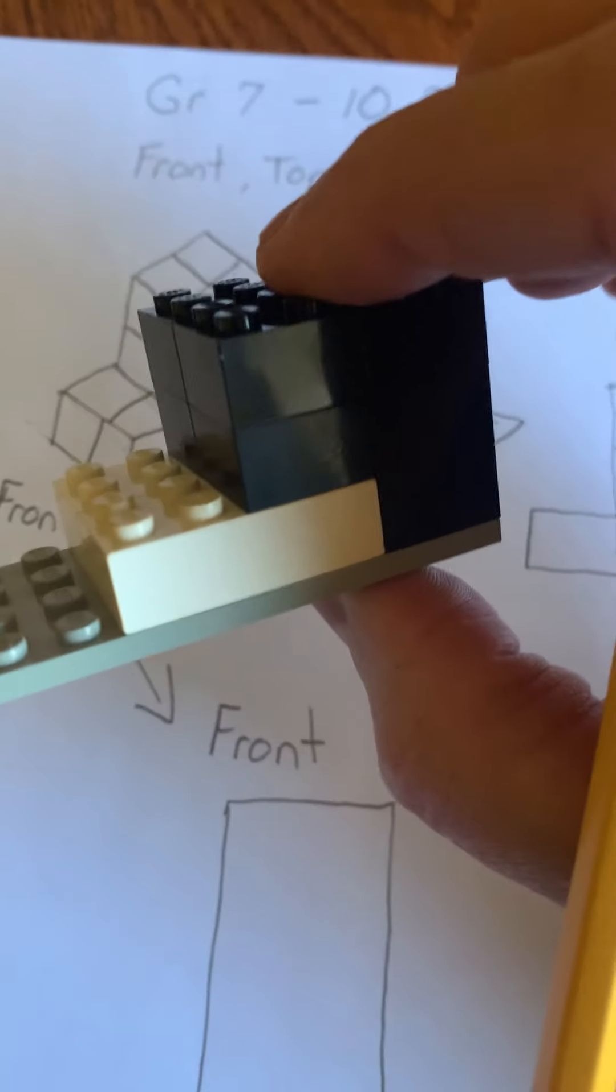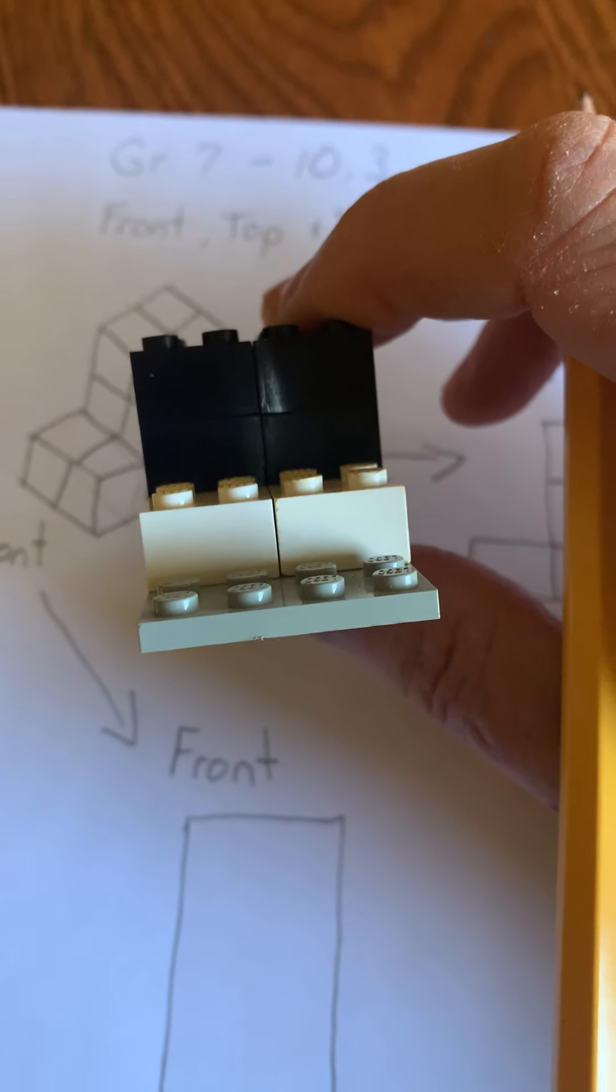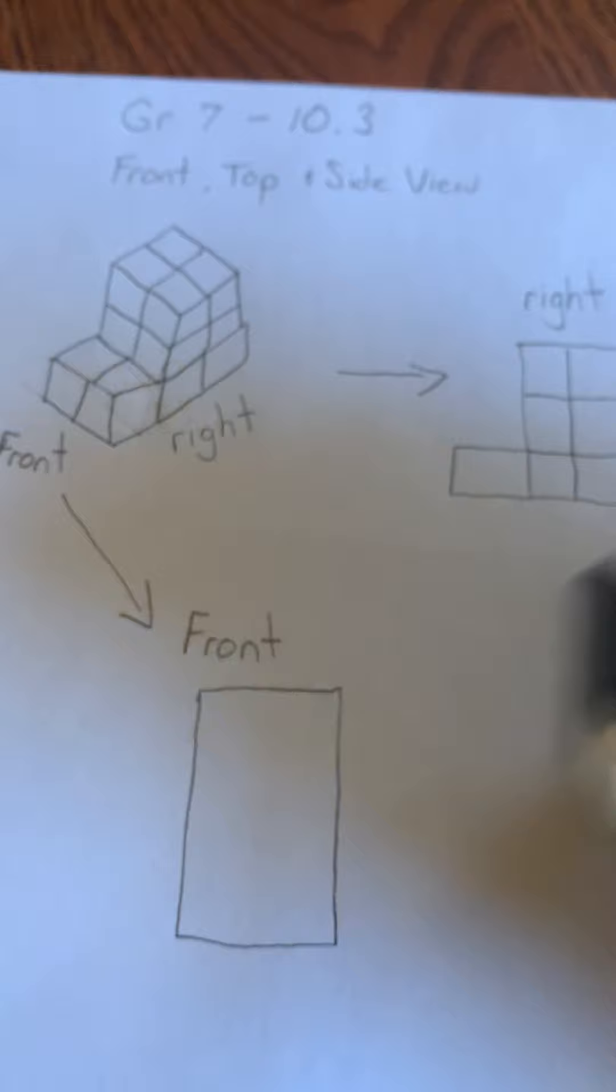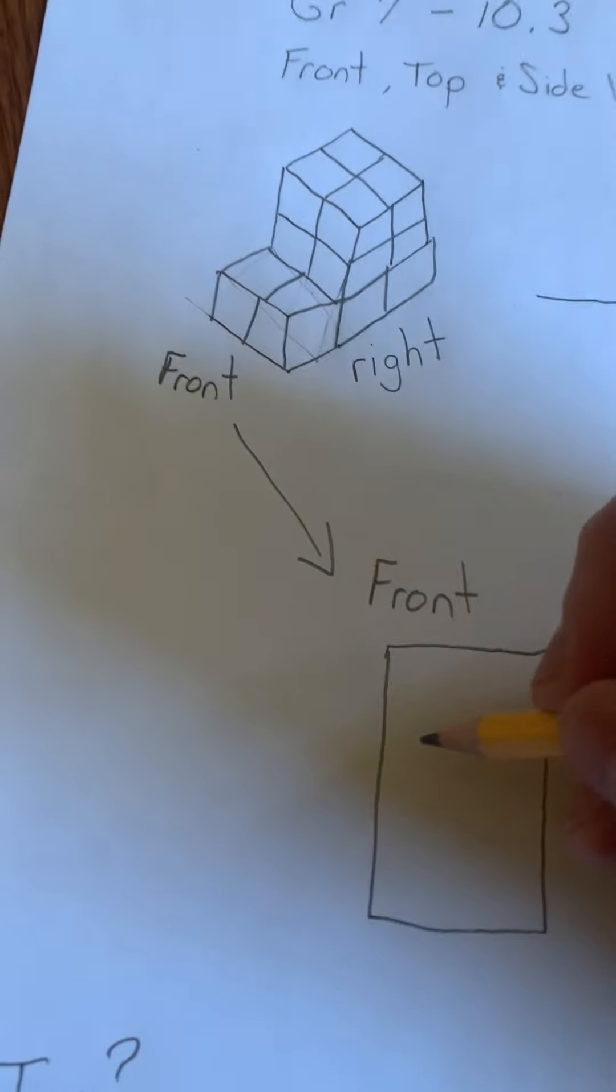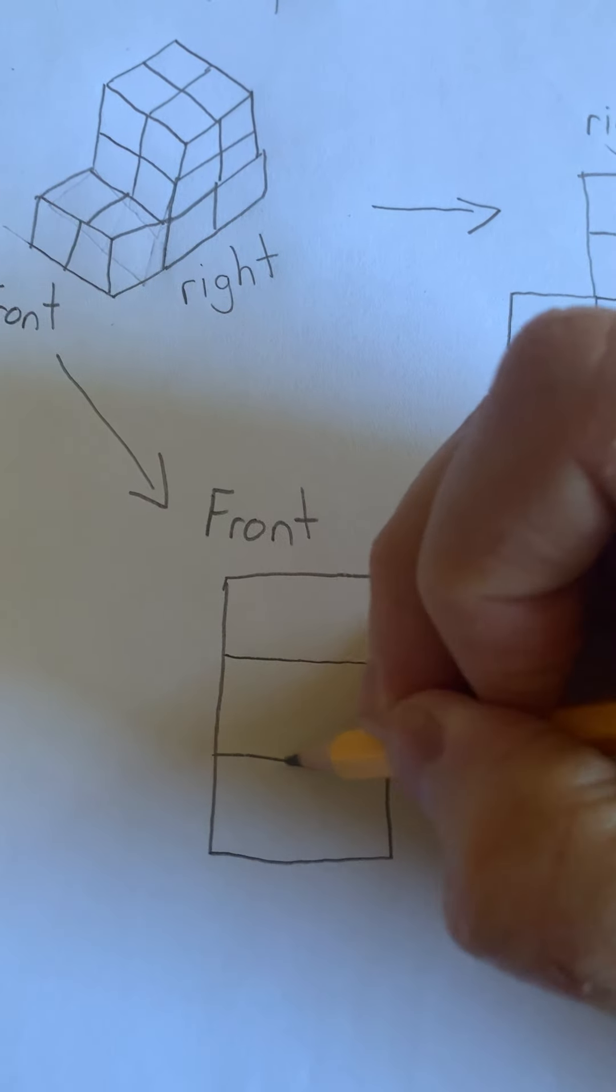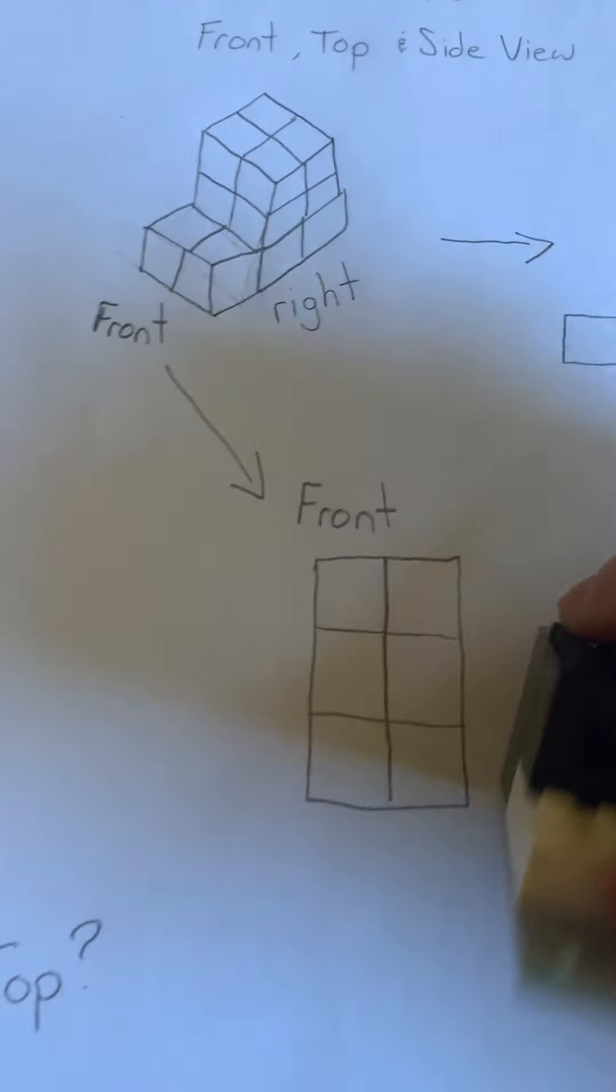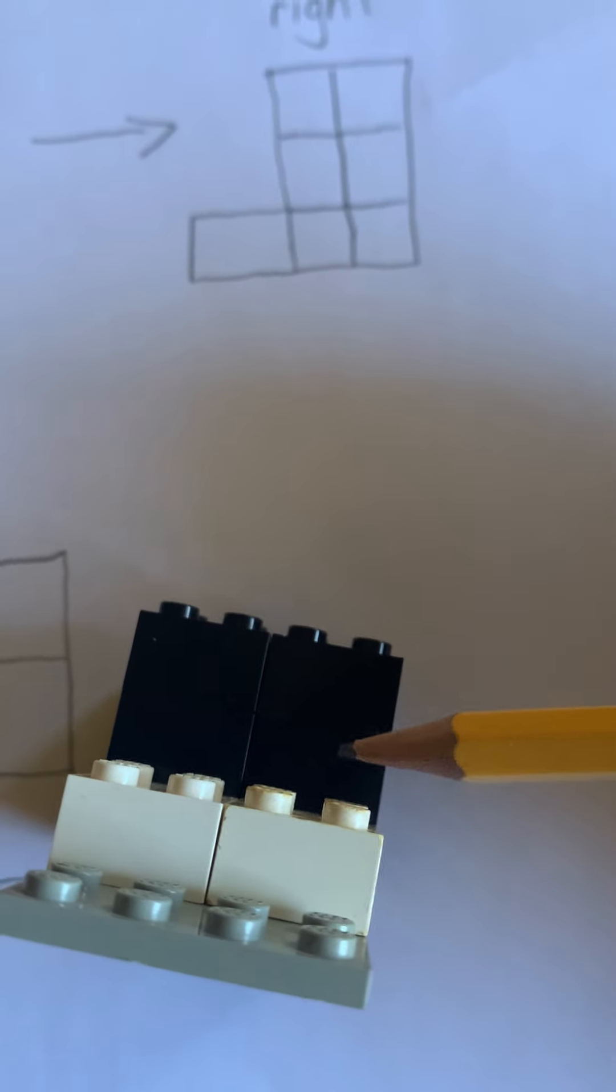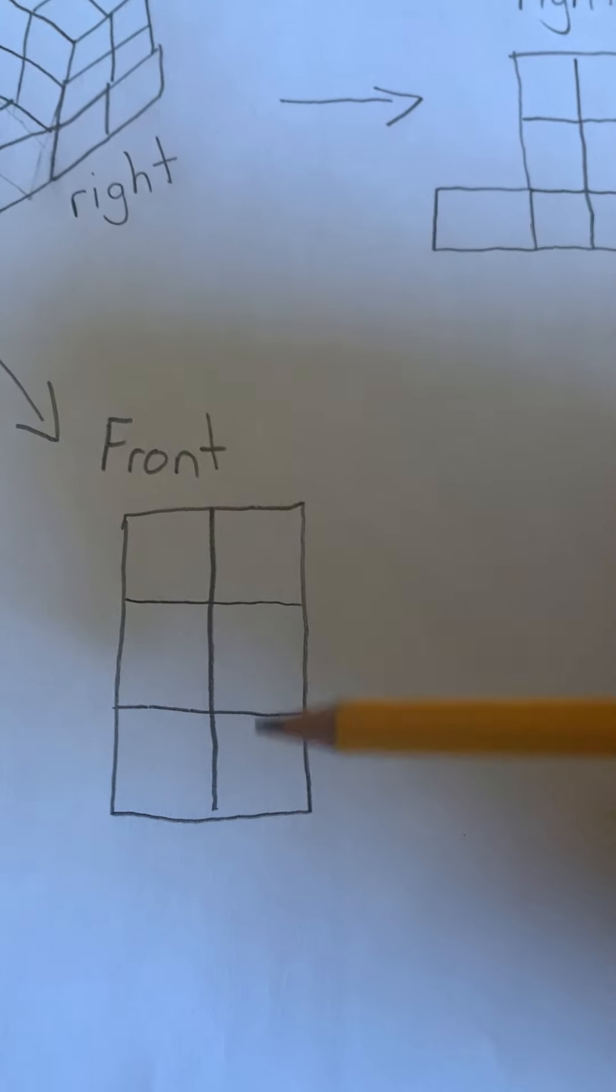Then we could look at something like the front. So we'd have to sort of mentally turn this, or if you built it, you could do it yourself. And we'd look at it and the image would look something like this. So from the front, this image actually kind of looks like a big rectangle, but now we need to separate this out and say, let's break it up into the six cubes that we know are there.